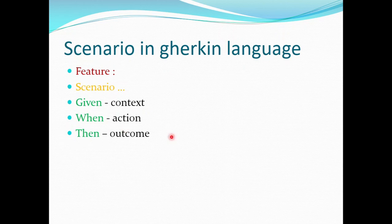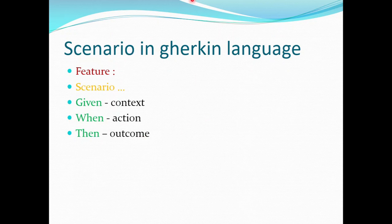In the Then keyword, we will be defining the outcome we are going to expect. So in this login application, the outcome we are expecting is that when we click on Submit, it has to navigate to the login page, and that can be defined under the Then keyword. So this is the basic skeleton of how we design a scenario in the feature file. Here you can see the screenshot of the scenario written in the feature file — we have started with the Feature keyword, followed by Scenario, and then used Given, When, and Then to design the scenarios.